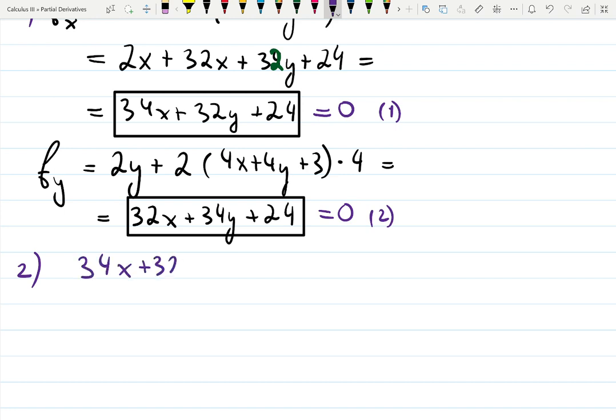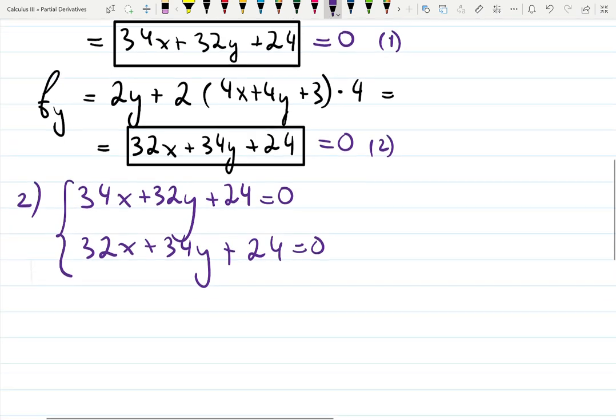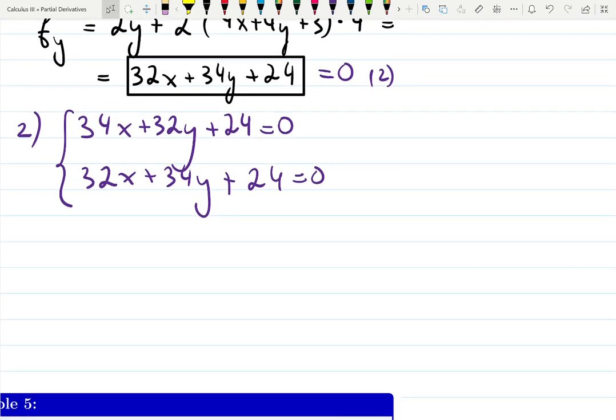34x plus 32y plus 24 equals 0, and 32x plus 34y plus 24 equals 0. You can subtract one from each other. 34 minus 32 will be 2x, 32 minus 34 will be -2y, 24 minus 24 is 0 equals 0. Divide by 2: x minus y equals 0. That's a pretty good promising number.